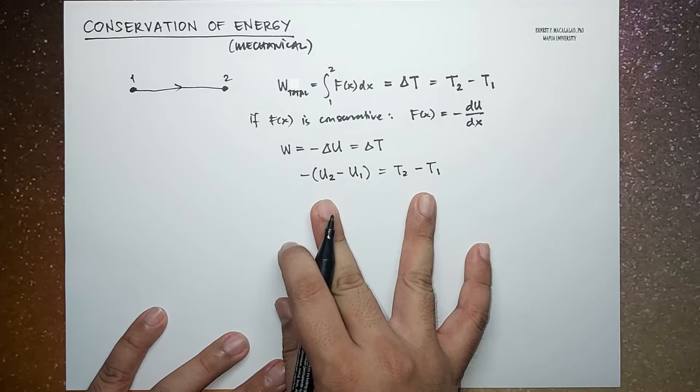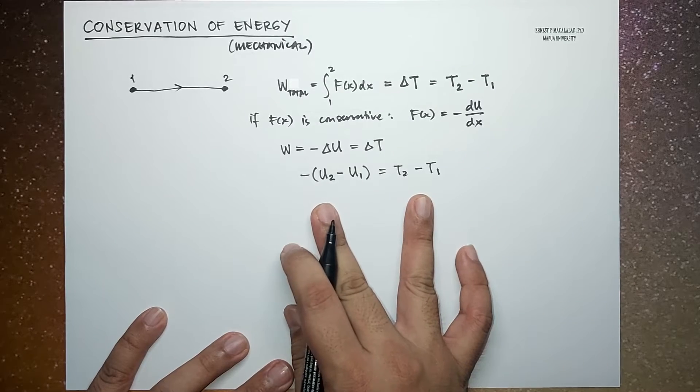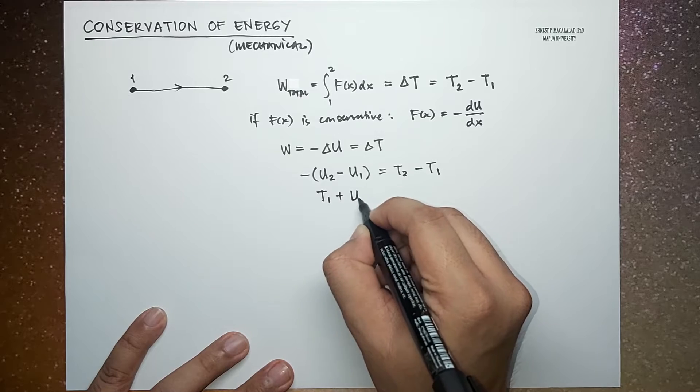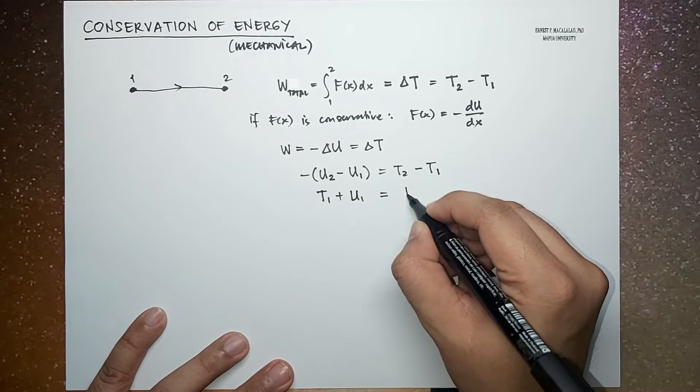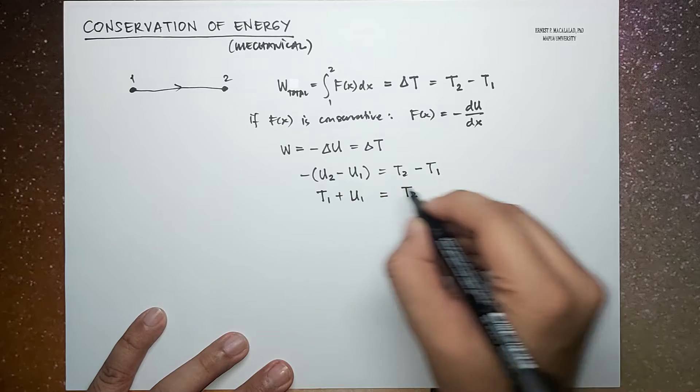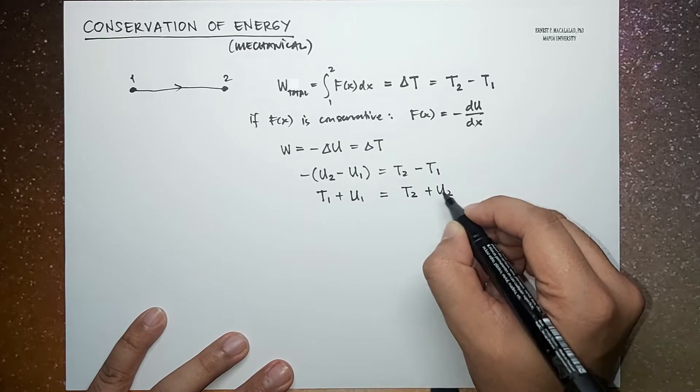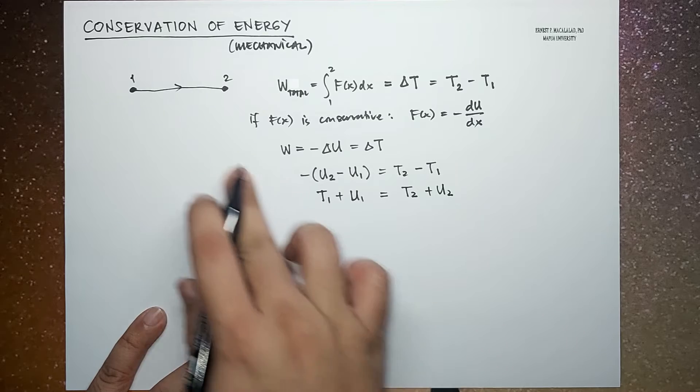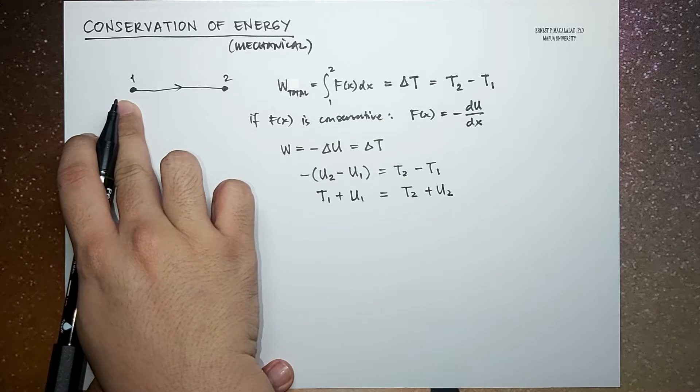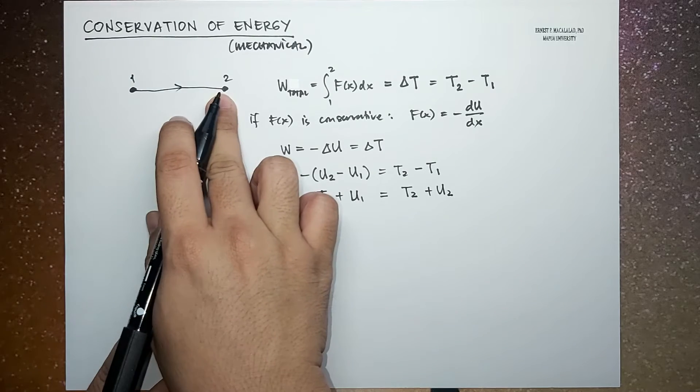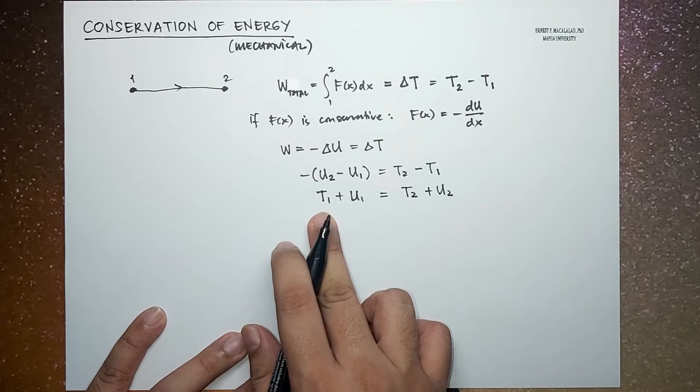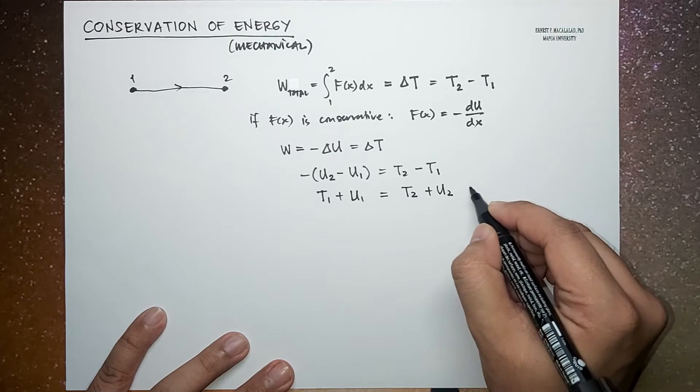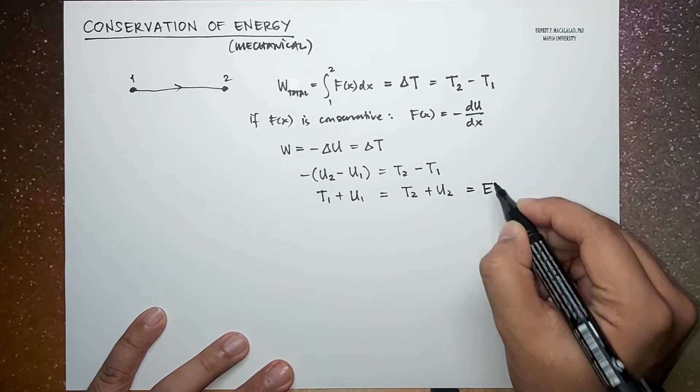So rearranging this, we now have T₁ plus U₁, and this is equal to T₂ plus U₂. So you will notice that at condition 1 and condition 2, the sum of your kinetic and potential energy are the same. We actually call this the total energy E.